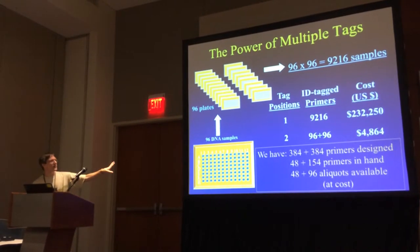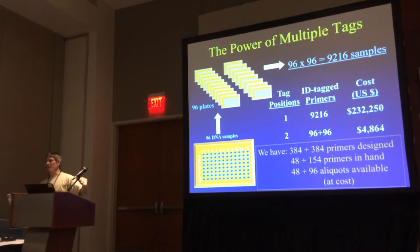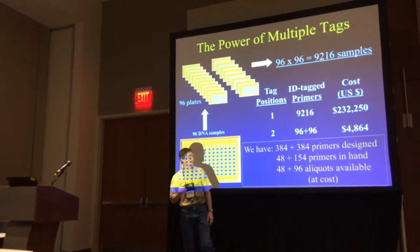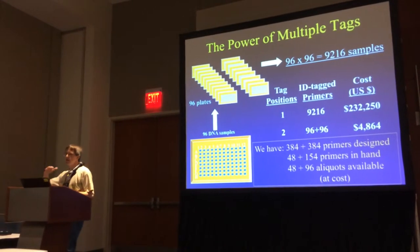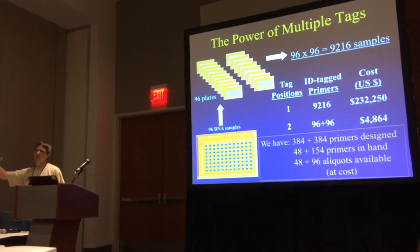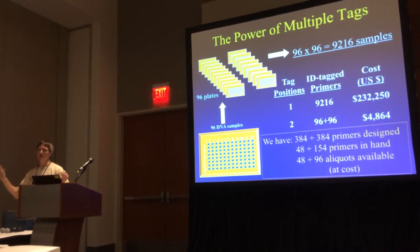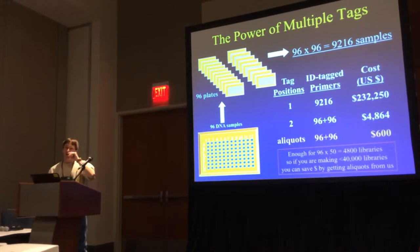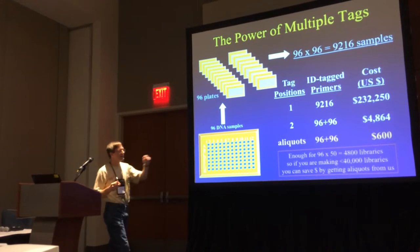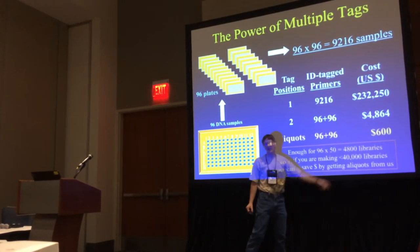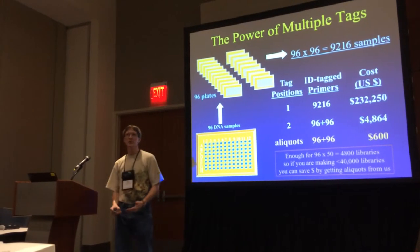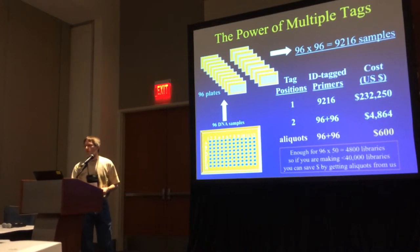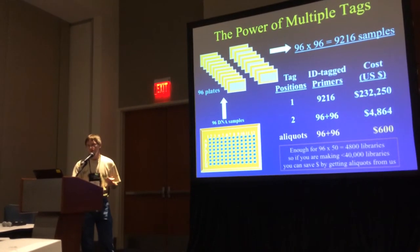We have 384 primers, so you could go 384 times 384 — that's the possible design space. We literally have 48 plus 154 in hand. The last time I had these synthesized, I had IDT make aliquots and dry them down in 96-well plates, 48 per plate. If you want some of those aliquots, just let me know. You could pay IDT $5,000, or pay us $600 and get enough to make 4,800 libraries. Economically, if you're going to make more than 40,000 libraries, pay IDT. If you're not going to make more than 40,000 libraries, you simply don't have to synthesize them yourself.